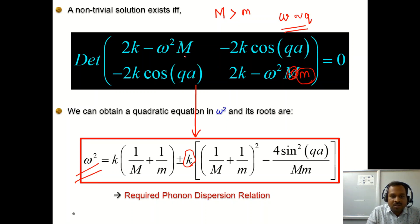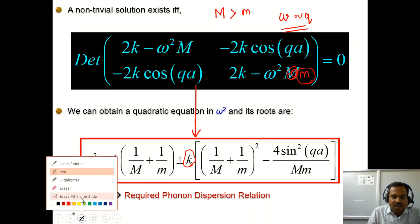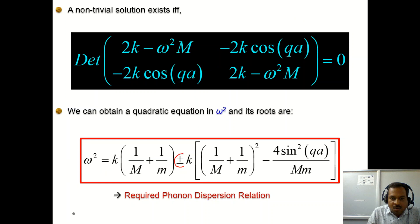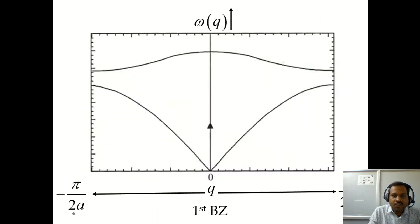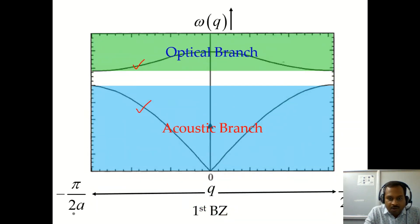The next step is to plot ω as a function of q. The ± sign in the dispersion relation yields two different branches in the phonon dispersion curve — one for higher frequency (plus sign) and one for lower frequency (minus sign). The higher-frequency branch corresponds to the optical branch and the lower-frequency branch corresponds to the acoustic branch.